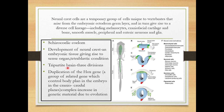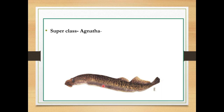There is a tripartite brain with three divisions: forebrain, midbrain, and hindbrain. There is also duplication of the HOX gene. HOX genes are a group of related genes which control the body plan in the embryo in the craniocaudal planes — anterior to posterior. The HOX gene content is increased due to evolution, which is why vertebrates are able to stand in an upright position.